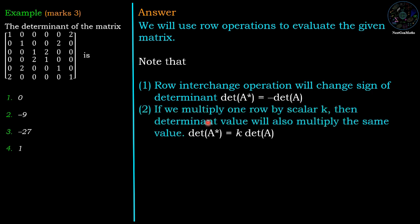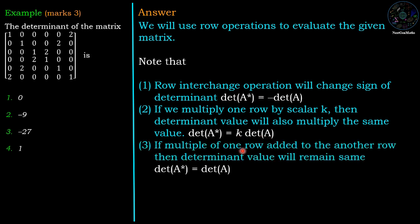Second operation: if we multiply any row by some scalar, then the determinant of A star is k times the determinant of A. And the third operation: if we multiply one row by some scalar and add it to another row, then the determinant value will remain same.